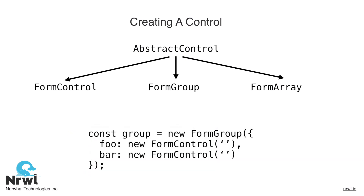Initializing a form group is quite similar. Our new form group declaration takes in an object of named abstract controls. In the scenario below, these are simply form controls, but as we'll see in the lessons, these could also be form arrays or other nested form groups as well.